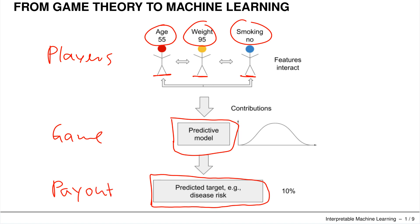The different features interact in the predictive model and that leads to a prediction. We have seen in the game theory part that if features do interact, the calculation of Shapley values is not straightforward.